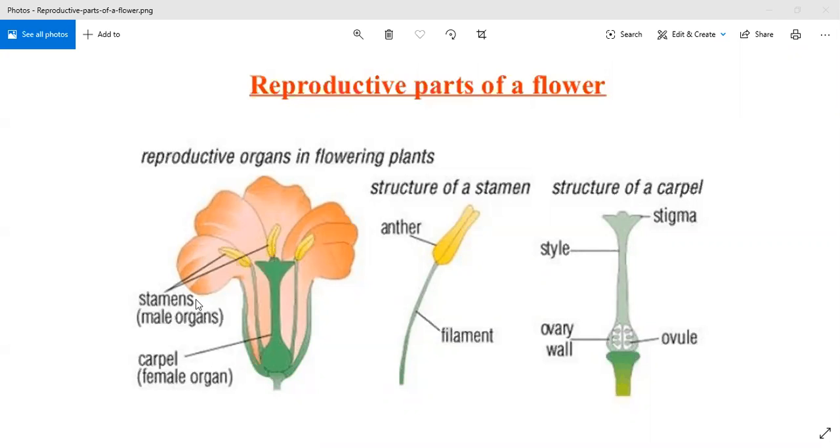First one is stamens, the male reproductive organ, and second one is carpel or pistil, the female reproductive organ.